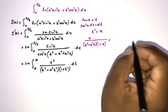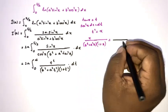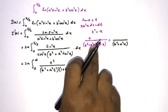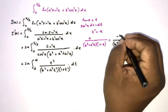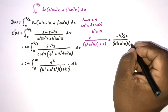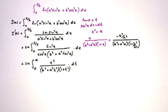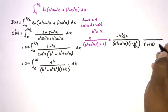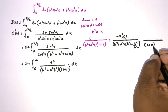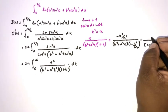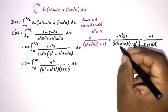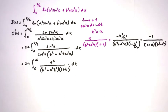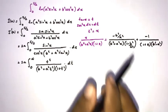Using the cover method: for the term with (b² + a²x), we plug in x = -b²/a², giving 1/(1 - b²/a²). For the term with (1 + x), we plug in x = -1, giving the denominator b² - a², so the numerator contribution involves b²/(b² - a²). After simplification we obtain the partial fraction coefficients.